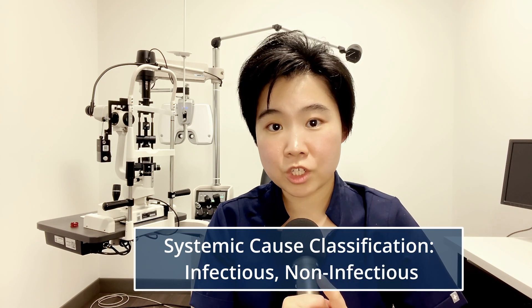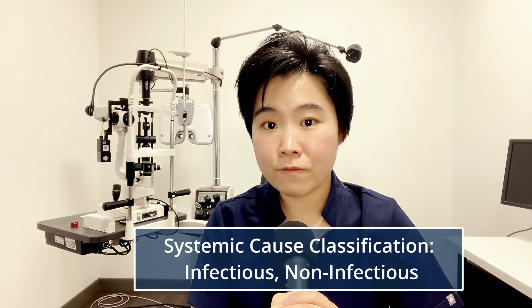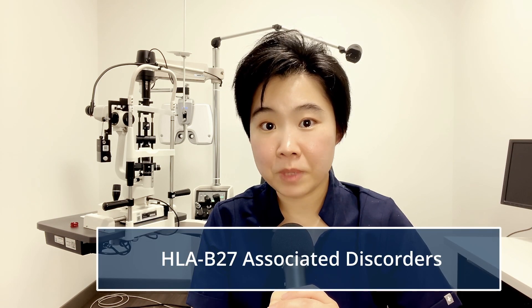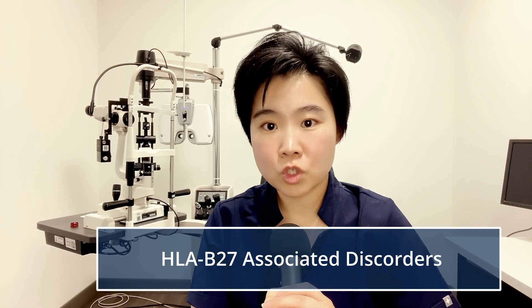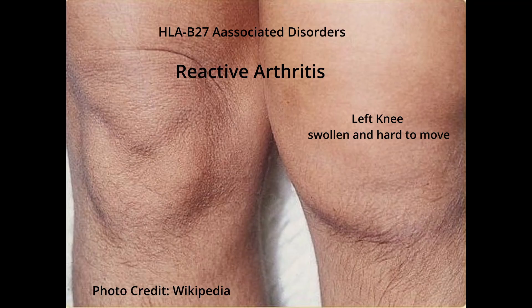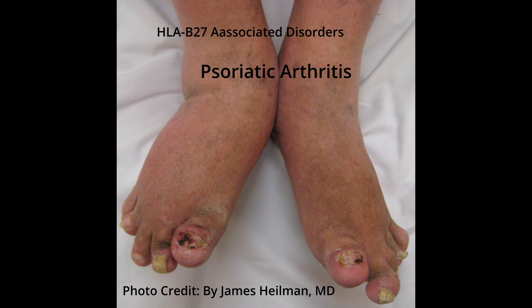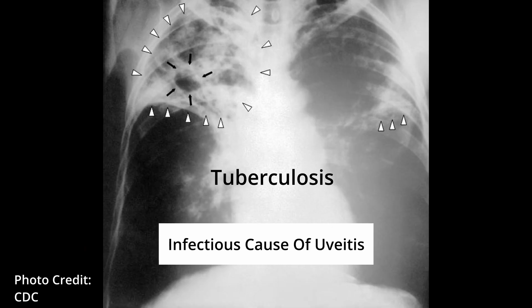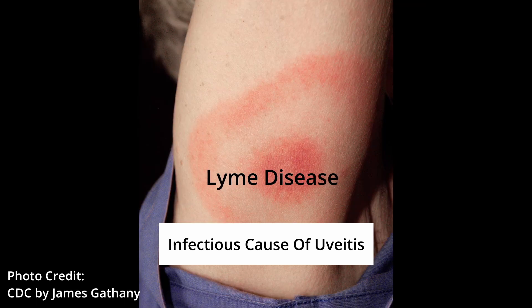Systemic causes of uveitis can be classified into infectious or non-infectious disorders. Non-infectious causes are more common, with nearly 50% of these cases attributed to a group of autoimmune conditions known as HLA-B27-associated disorders. This group includes ankylosing spondylitis, which causes inflammation of the spine and can lead to lower back pain, reactive arthritis, psoriatic arthritis, and inflammatory bowel disease, such as Crohn's disease. Infectious causes can include tuberculosis, syphilis, Lyme disease, and much more.